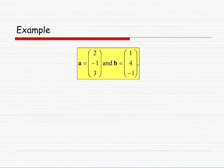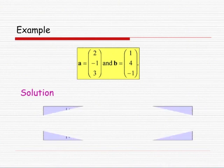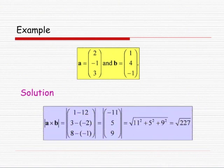In this example, we calculate the area of the parallelogram included by the vectors A = (2, -1, 3) and B = (1, 4, -1). To solve this problem, we calculate the modulus of A × B. A × B = (1-12, 3-(-2), 8-(-1)) = (-11, 5, 9). The modulus of this vector is √(11² + 5² + 9²), which is √227.